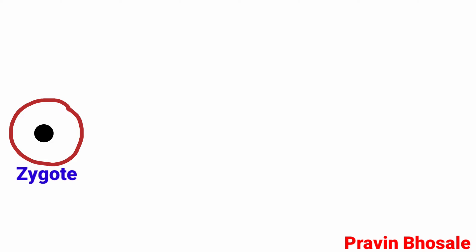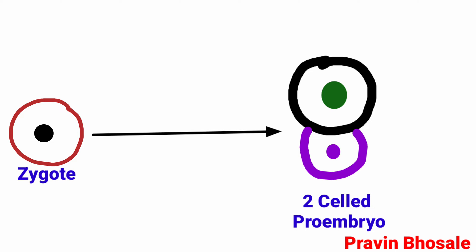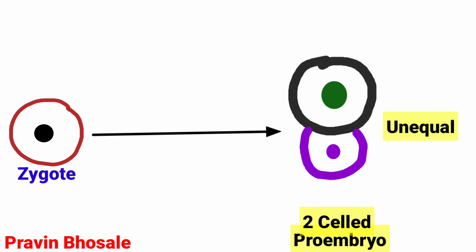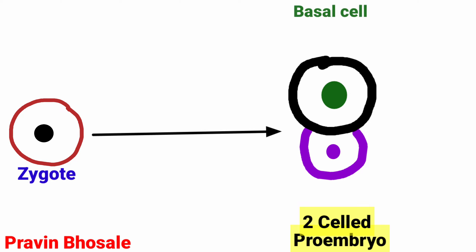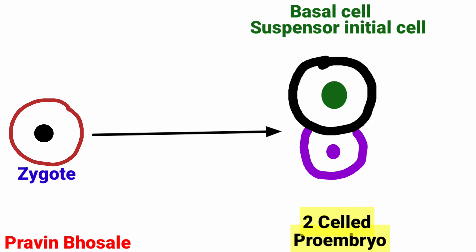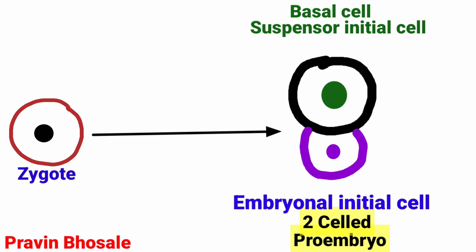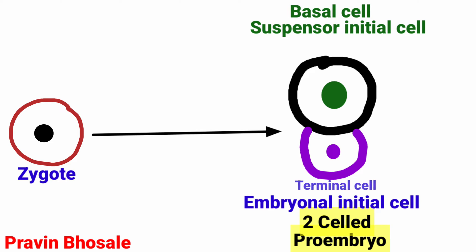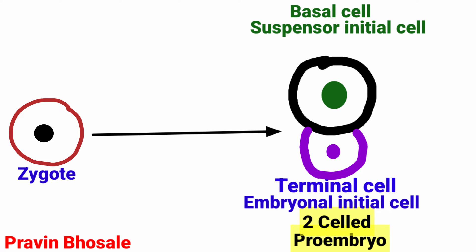The zygote divides to form a two-celled pro-embryo. The two cells are unequal in size. The larger cell towards the micropylar end is called the basal or suspensor initial cell, and the smaller cell at the other end is called the embryonal initial cell or terminal cell.